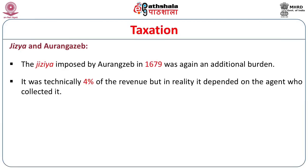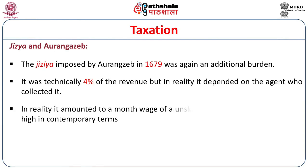At this point of time the state was facing a huge financial crisis. The Jizya was technically 4% of the revenue, but in reality it depended on the agent who collected it. In reality, this amount could go up to a month's wage of an unskilled laborer, and was thus very high in contemporary terms.